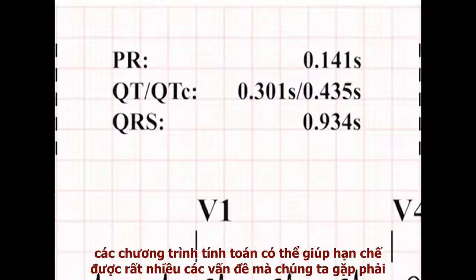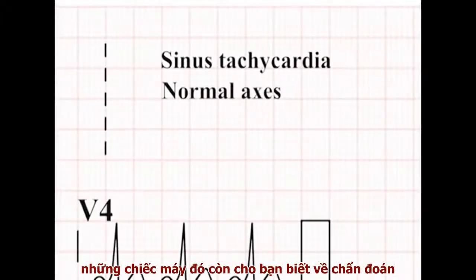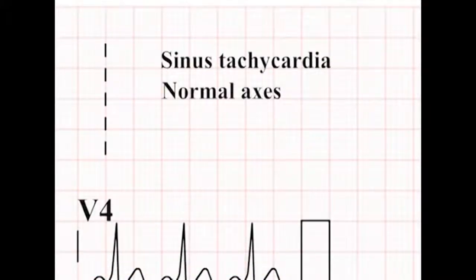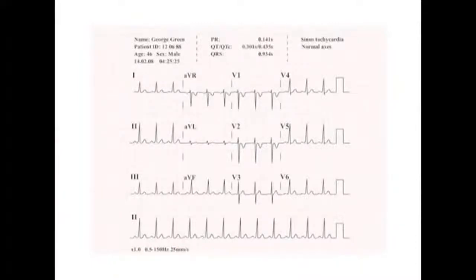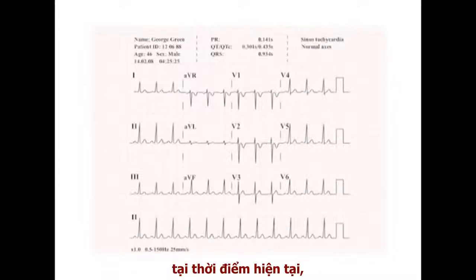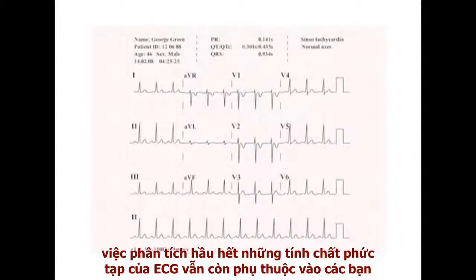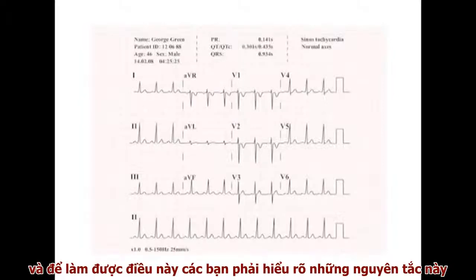The computerised calculations attempt to eliminate many of the problems outlined when discussing estimation of the corrected QT. These machines will even present you with a diagnosis. Both your own estimates and the computer's have merits, but it is important to realise that computer analysis has its own difficulties and limitations. At the present time, the analysis of the most complex ECGs still rests with you, so you must be able to do it from basic principles — and to do so, you must understand or at least be aware of these principles.